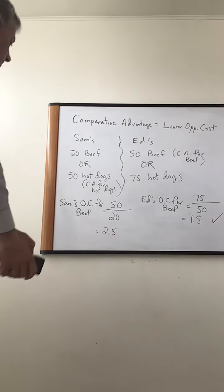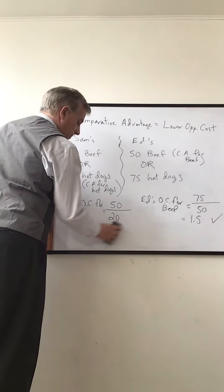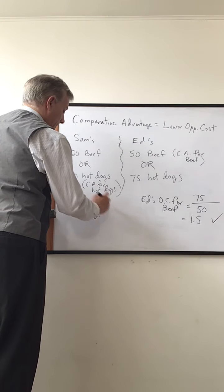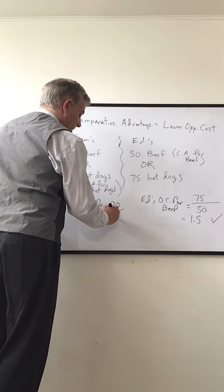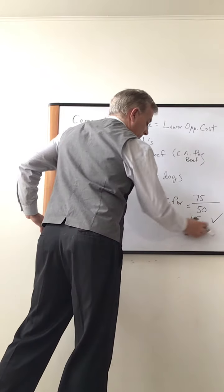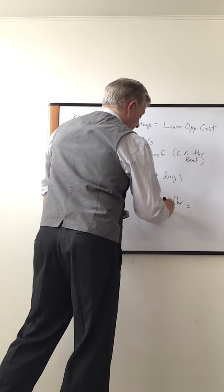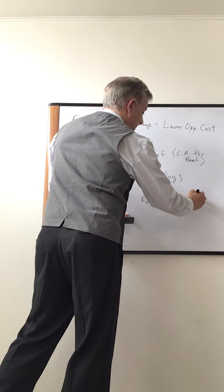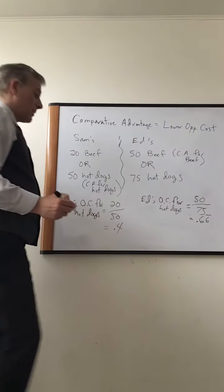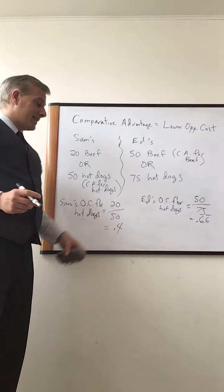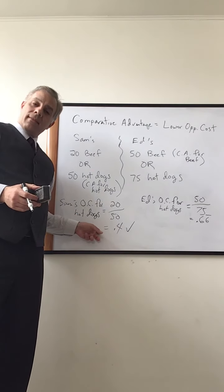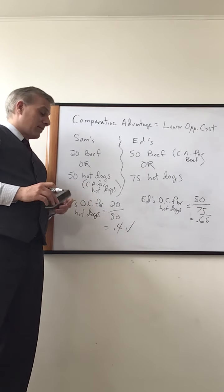Okay. So Sam's opportunity cost for hot dogs is going to equal 20 over 50, which is 0.4. And Ed's opportunity cost for hot dogs is going to be 50 over 75, which is 0.66 repeating. Well, last time I checked, 0.4 is less than 0.6. So we get the verification, if we needed it, that Sam has comparative advantage for hot dogs.